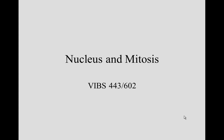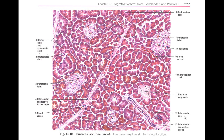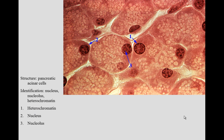Nucleus and mitosis. Here we see the pancreatic acinar cells and we've been looking at those cells for the cytoplasm. Today we're going to look at the nucleus of those cells.